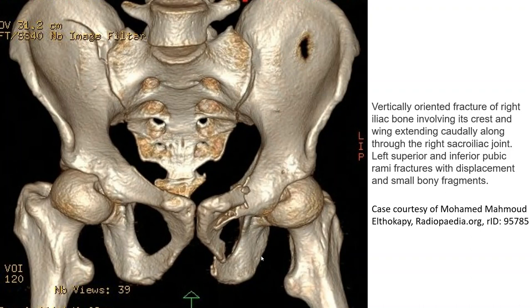This is the 3D pelvic CT. The vertically oriented fracture of the right iliac bone involving its crest and wing is extending through the right sacroiliac joint. Left superior and inferior pubic rami fracture with displacement and small bone fracture are also visible. This is what we call a vertical shear pelvic fracture.